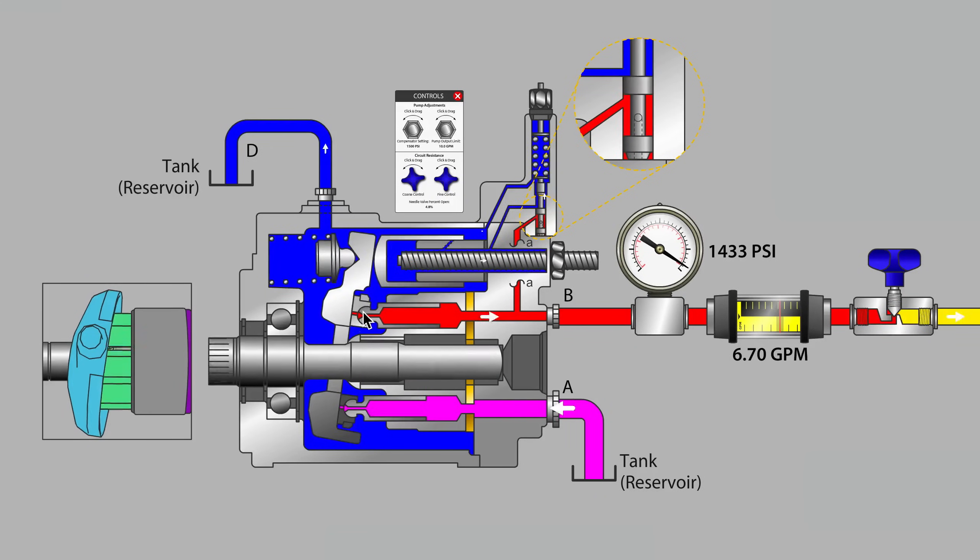There's typically a bit of clearance on the back of the slipper pads or piston shoes as they're sometimes called. Those shoes are floating on the swash plate.